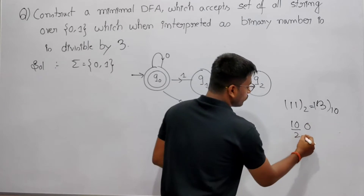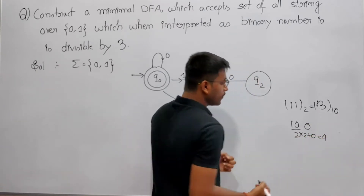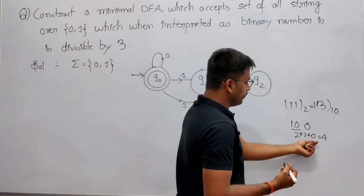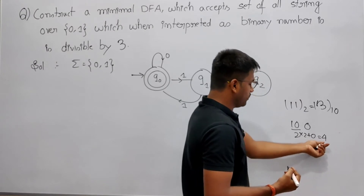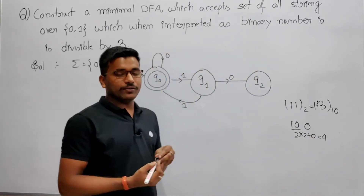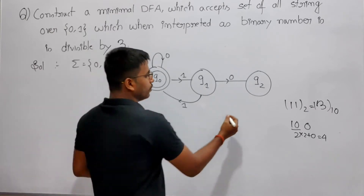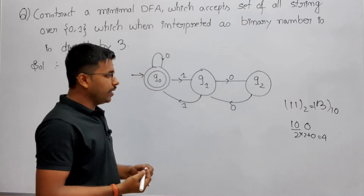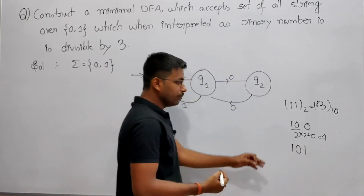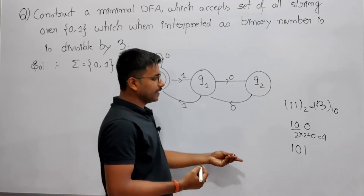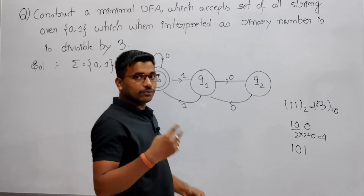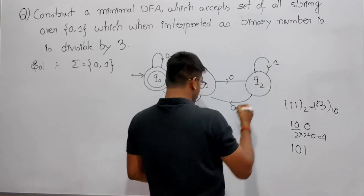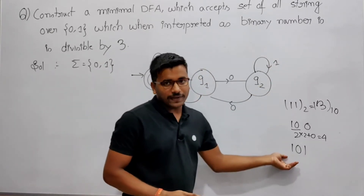If from Q2 I give input 0, it is 2×2+0 = 4; 4 divided by 3 gives remainder 1, so by getting 0 it should go to Q1. Now binary 101 is 5; divide by 5 by 3 gives remainder 2, so from Q2 on input 1 you stay at Q2. So we have now constructed all transitions.